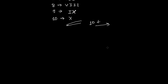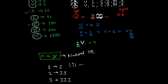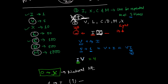In the previous video we learned to write Roman numbers till 10, and now we're going to learn above 10. So far we have learned these seven symbols: I for 1, V for 5, X for 10, L for 50, C for 100, D for 500, and M for 1000. If you write a symbol to the right side, you add it; if you write it to the left side, you subtract it.